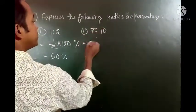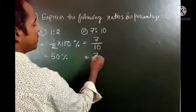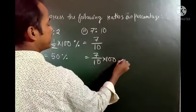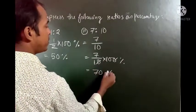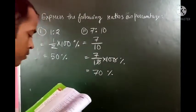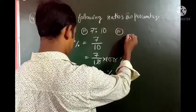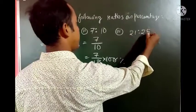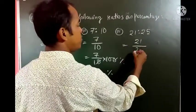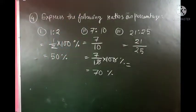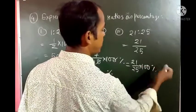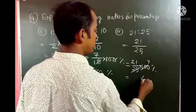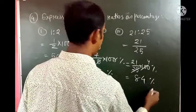Next: 7 is to 10. So 7 is to 10 means 7 by 10. So 7 by 10 into 100 gives 70 percent. Question number 3: 21 is to 25. So 21 is to 25 means 21 by 25. So 21 by 25 into 100 percent. Simplifying gives 84 percent.